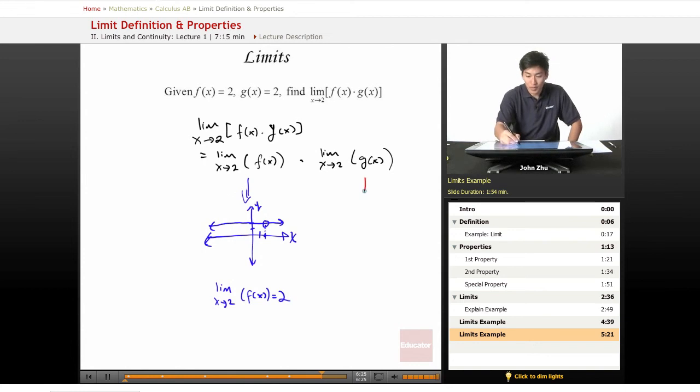So the same reasoning for g(x), the same exact graph as x approaches 2, or anything, y approaches 2. Or is 2.